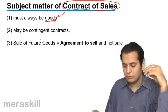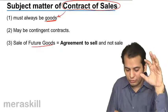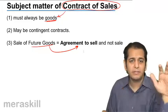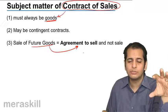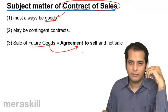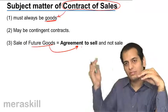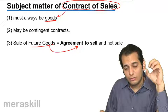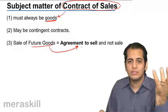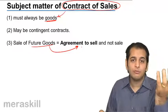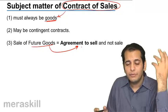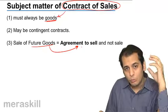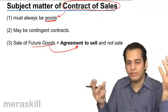Please remember, in case of future goods, it is always an agreement to sell — always. There can never be a case where, in case of future goods, you have done a sale contract, because goods will come into existence at a future date, and only when they come into existence can their ownership be transferred. The example I gave was of potatoes. When the potatoes themselves are not yet in existence, how can you transfer the ownership?